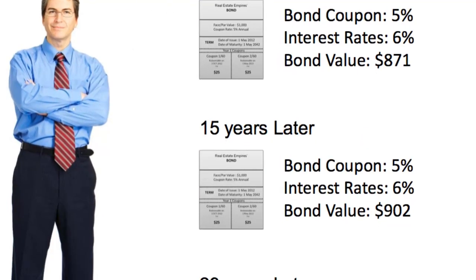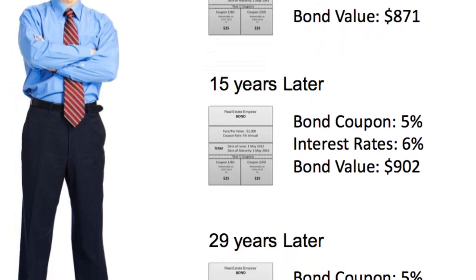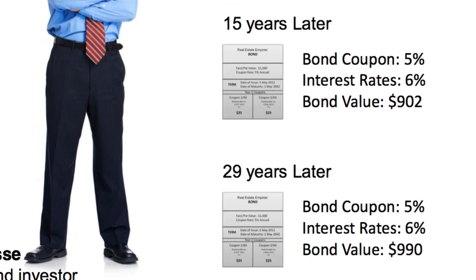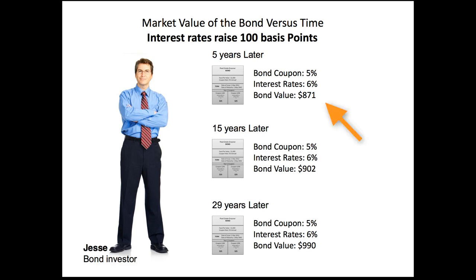Let's look at the 15-year scenario. Jesse held the bond for 15 years and wants to sell it. The coupon rate he bought it for was 5% — that's not going to change — and interest rates are still at 6%. But his bond value is now higher than it was at the five-year mark. If he was going to sell at 29 years — meaning only one year left before maturity — with interest rates still at 6%, his bond value is $990. So why does the value keep changing when only the remaining term changed?